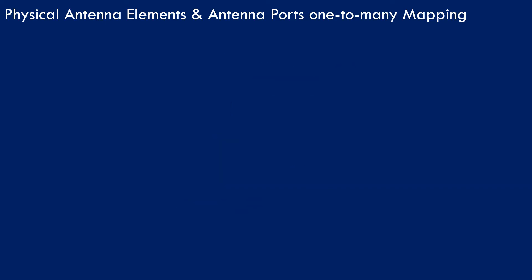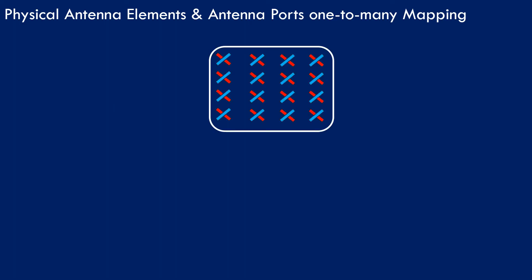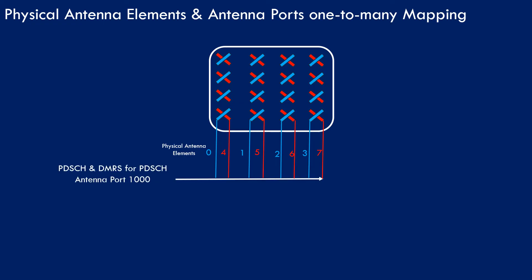In a one-to-many mapping example, the antenna array consists of multiple columns of cross-polarized antenna elements. Here we have eight cross-polarized antenna elements, and both PDSCH and its DMRS use antenna port 1000 mapped onto all eight physical antenna elements. Using a larger number of physical antenna elements per antenna port increases the beamforming gain and directivity. From the UE perspective, there is a single downlink transmission originating from antenna port 1000.